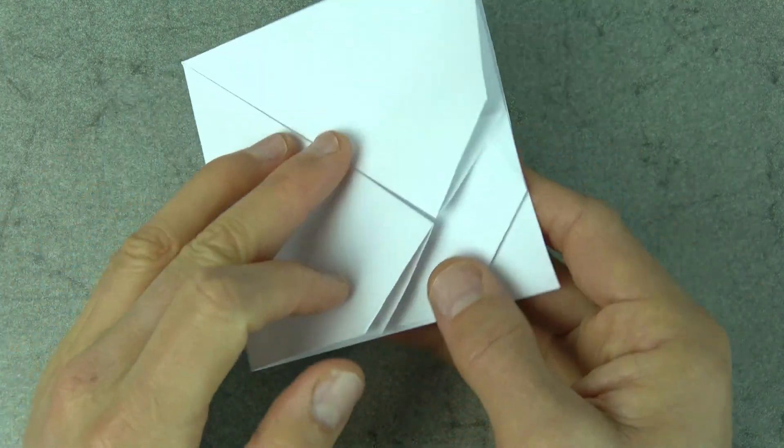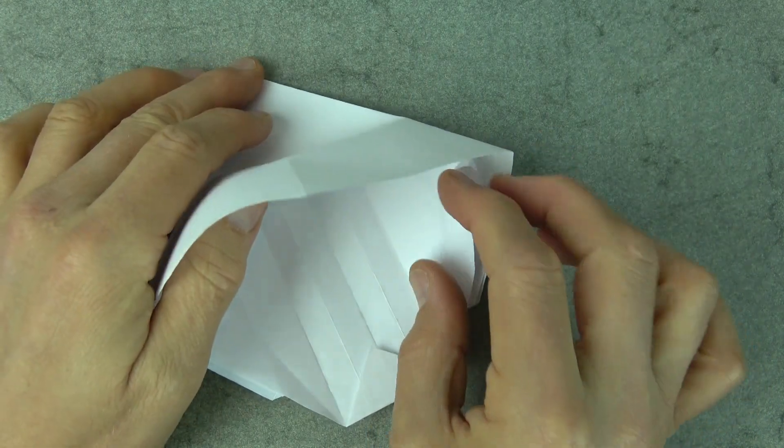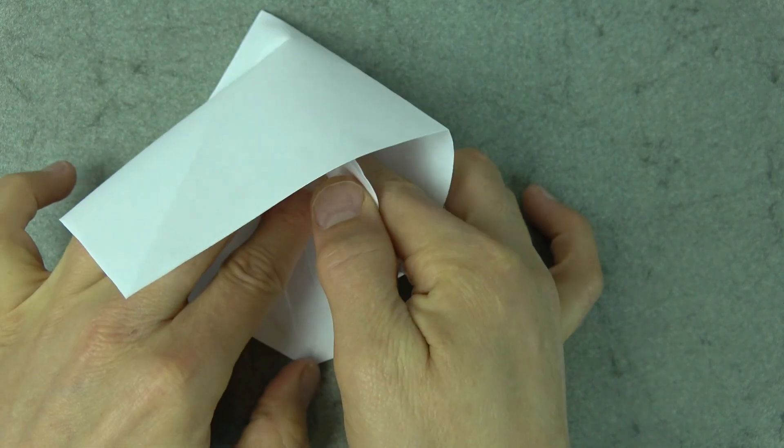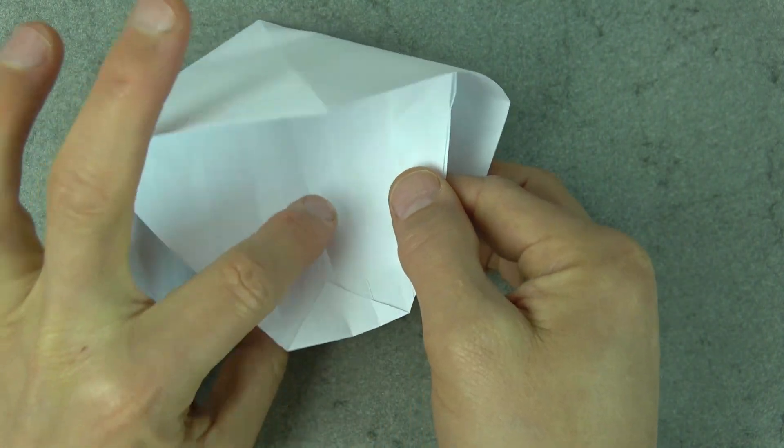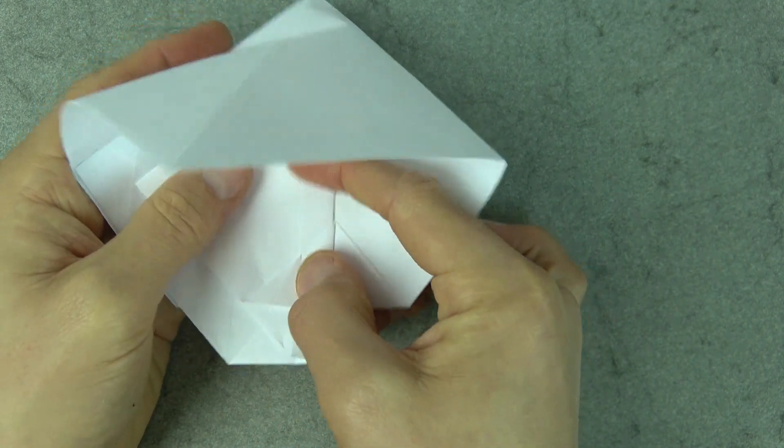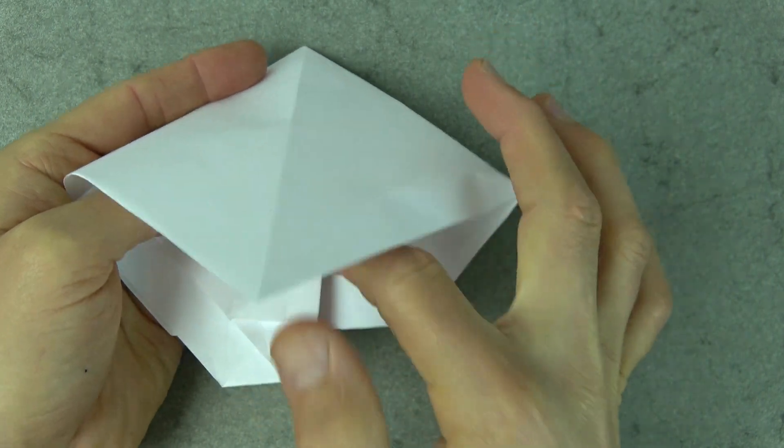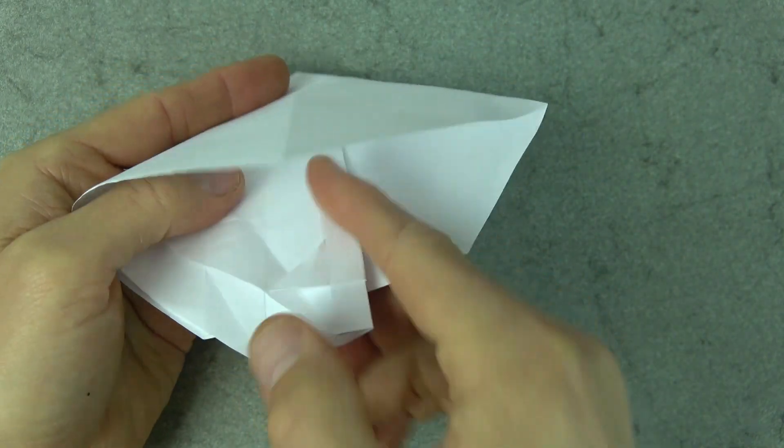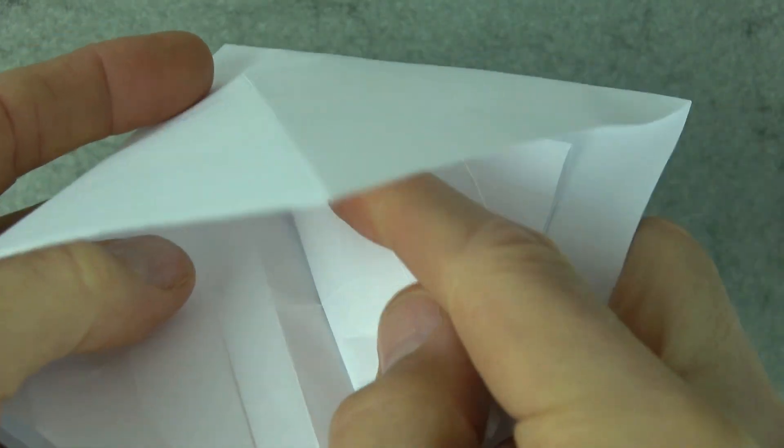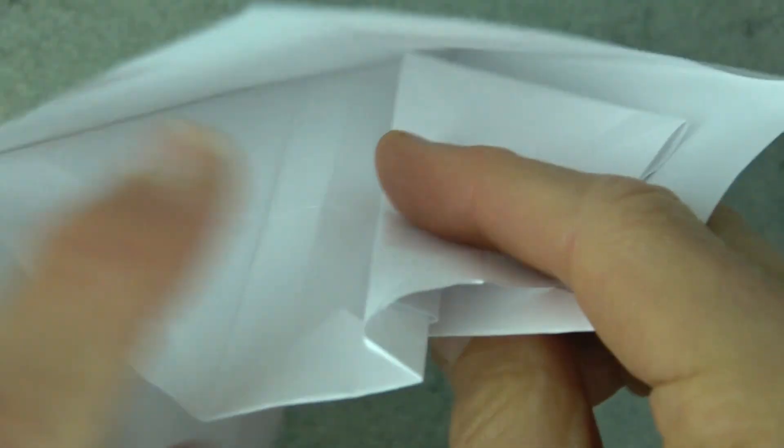Okay, now turn over and fold this interior flap over on this crease. Make it go all the way down. And now fold it back the other direction. Like that.